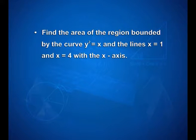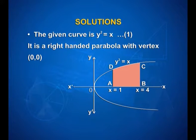The first question was: find the area of the region bounded by the curve y square is equal to x and the lines x is equal to 1 and x is equal to 4 with the x axis. The given curve y square is equal to x is a right-handed parabola with vertex at the origin (0, 0).